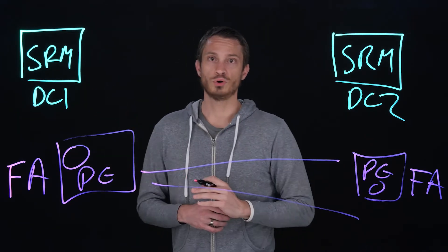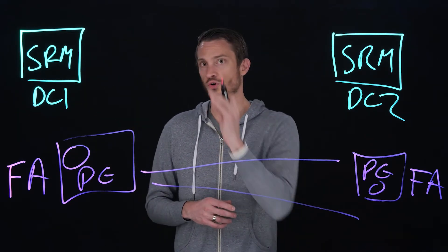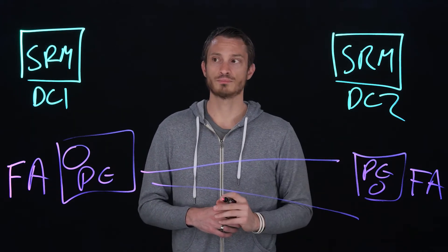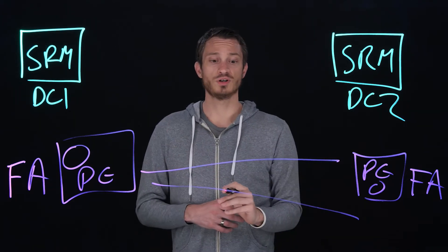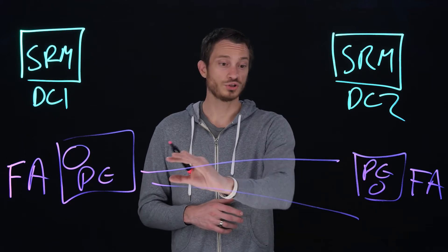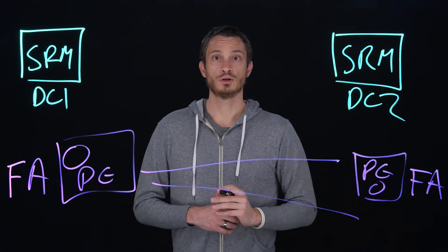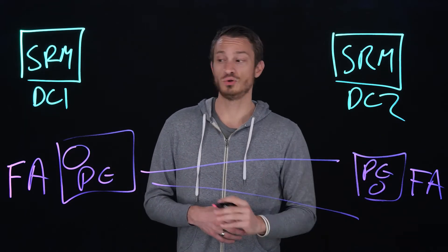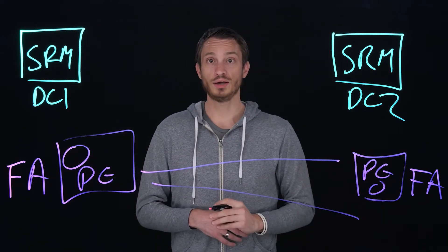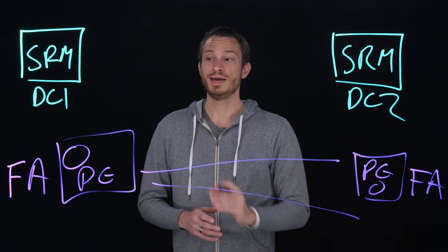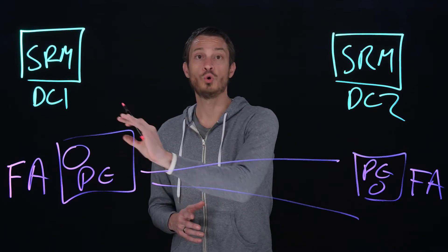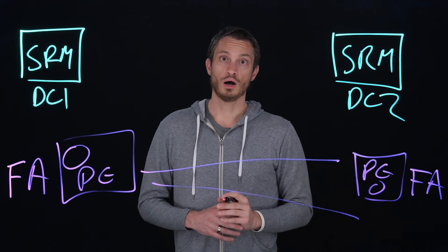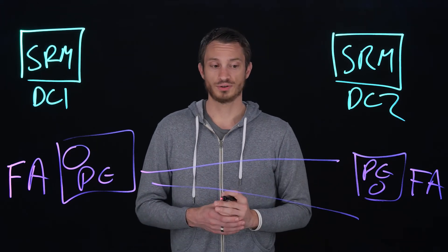Your VMware datastores and the virtual machines on top of them will be replicated to this far side. Then you can have Site Recovery Manager choose which of these control paths you would like it to manage — between FA1 and FA2, FA1 to FA3, or multiple different pairs. SRM coordinates the failover and test failover of this failover process.